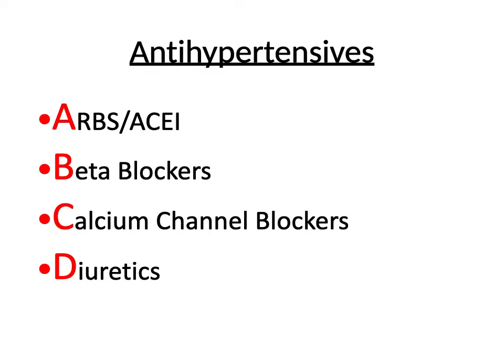A is for your ARBs and your ACE inhibitors. B is for your beta blockers. C is for those calcium channel blockers. And D is for diuretics. So in general, if you're going to treat hypertension, at least for something on the NCLEX, just remember A, B, C, D as your first set of choices. Hope that's helpful. I'll see you again soon.